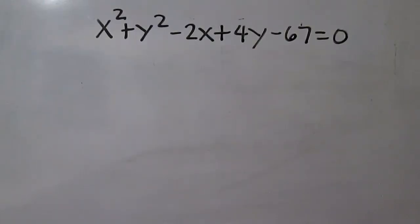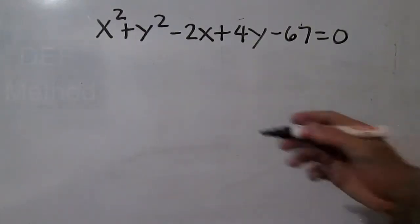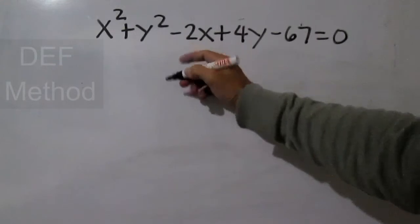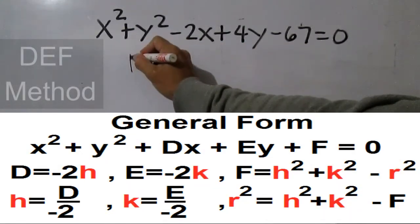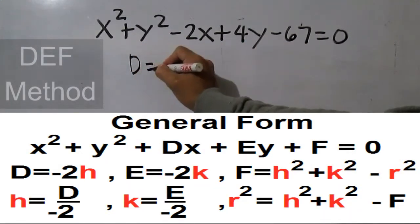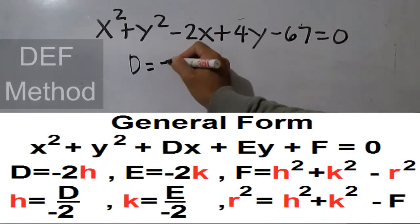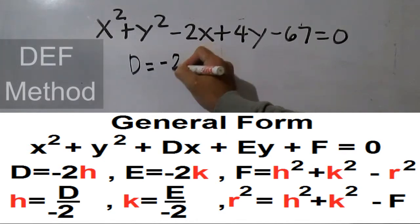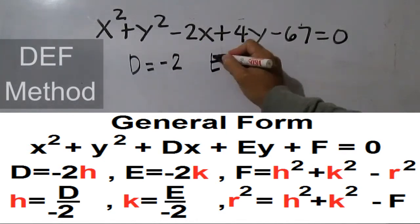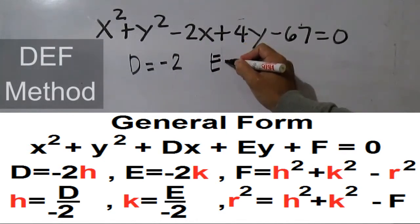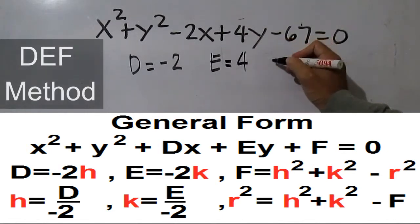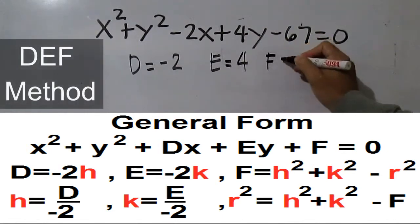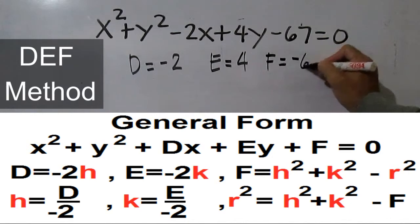Now using the DEF method for the same equation: d is equal to negative 2, e is equal to 4, and f equals negative 67.